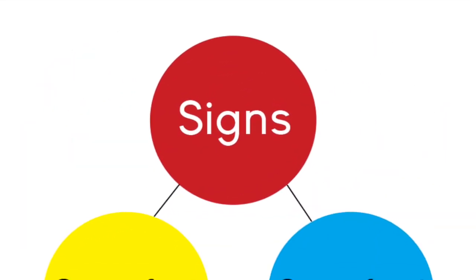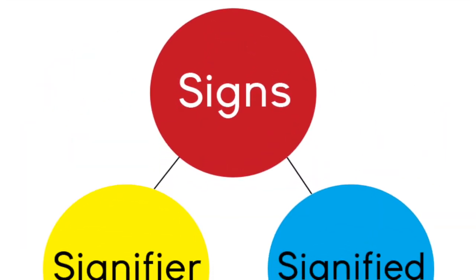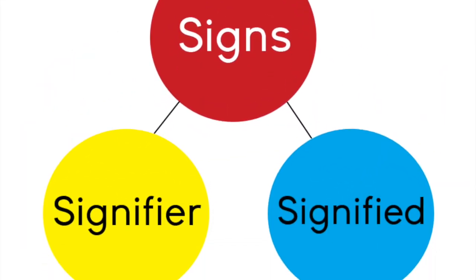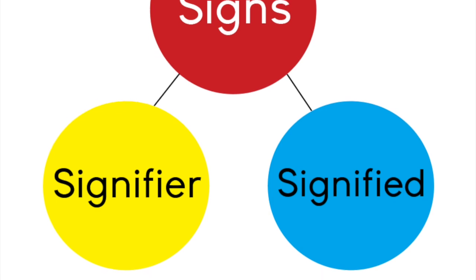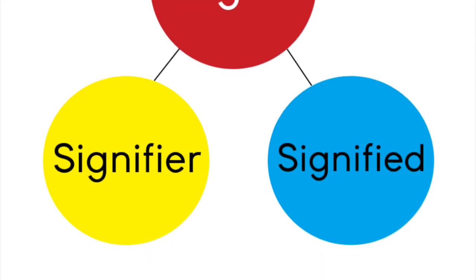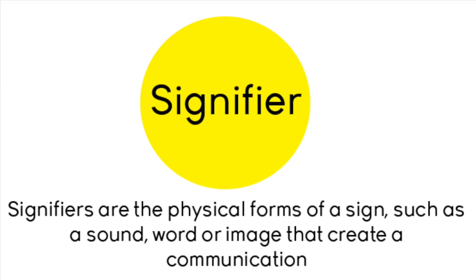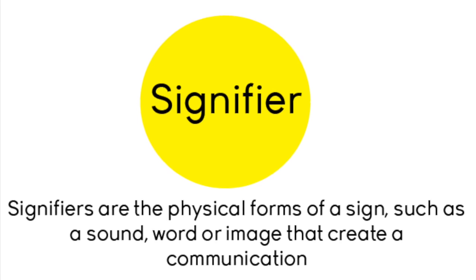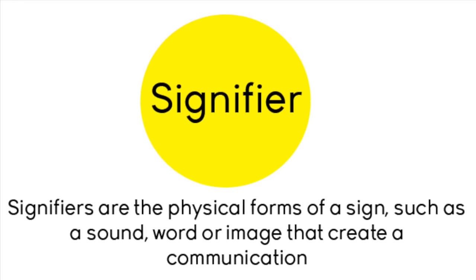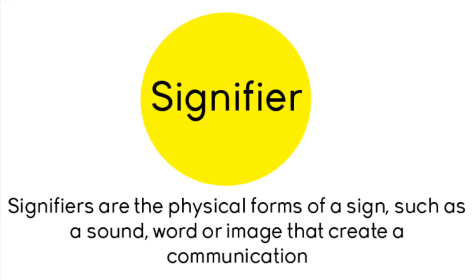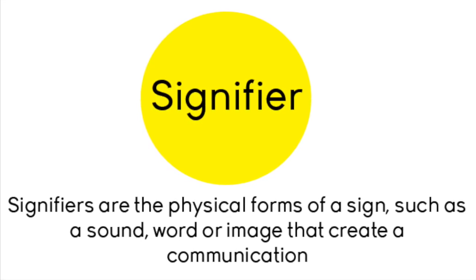Signs are broken down into two parts: signifiers and the signified. Signifiers are the physical forms of a sign, such as a sound, word, or image that create a communication.